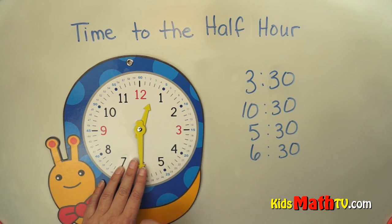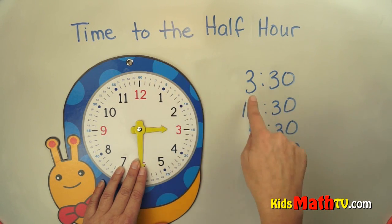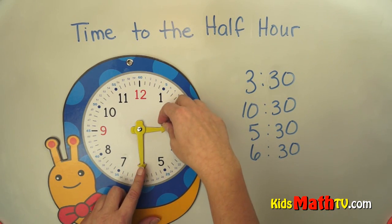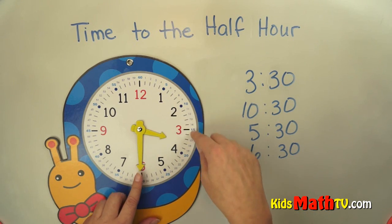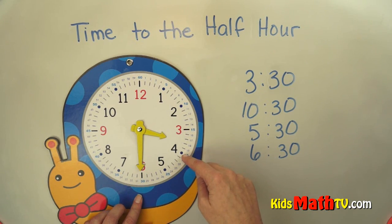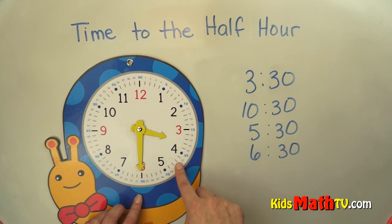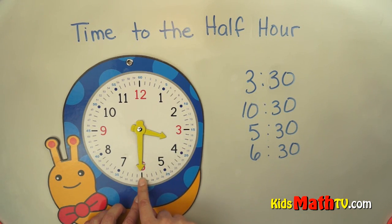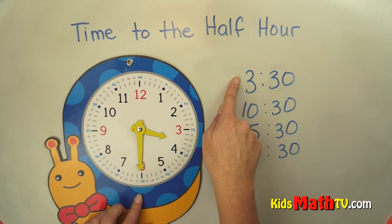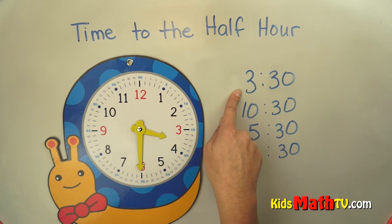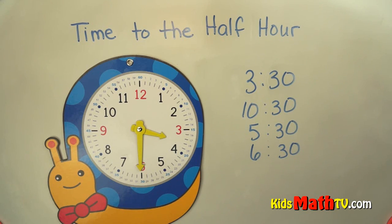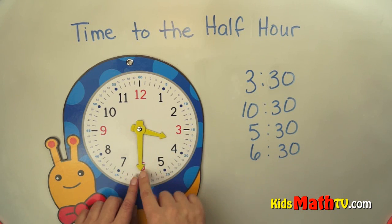If we wanted to show 3:30, the hour is 3 and the minutes are 30, but it's halfway between 3 and 4 o'clock. So our hour hand needs to be halfway between 3 and 4. This shows 3:30 — the hour is in the hour of 3 and 30 minutes past. We could say '30 minutes past 3,' '3:30,' or 'half past 3.' There are lots of different ways to say that.